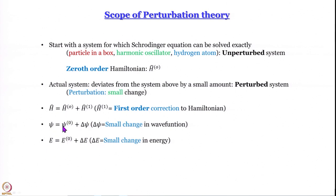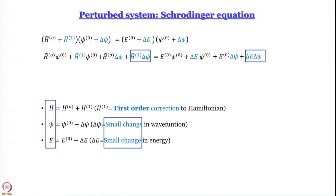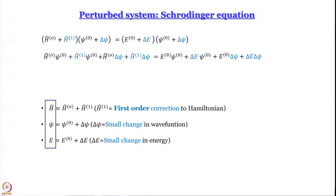Since the zeroth-order wave functions form a complete orthonormal set, and we are talking about a very small distortion, the perturbed wave functions are roughly going to be in that same function space. Whatever the perturbed wave function is, we should be able to write it as a linear combination of all the orthonormal wave functions of the unperturbed system — essentially, ψ = Σᵢ cᵢψᵢ⁽⁰⁾.